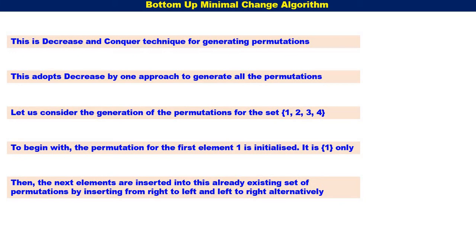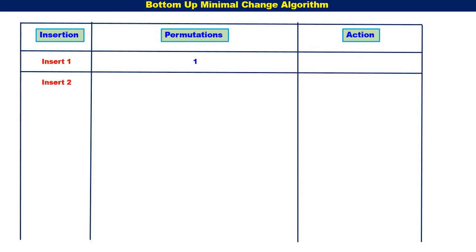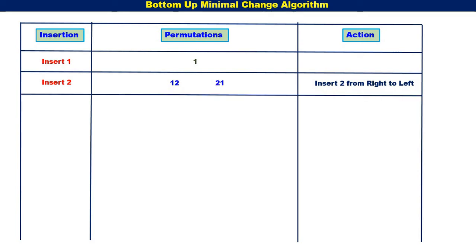With an example, it will be more clear. Insert 1 — there is only 1 permutation: {1}. Next, insert 2. It should be inserted into the already existing permutation {1}, and as I told, we have to start from right to left. First, we insert 2 to the right of 1, we get {1, 2}. Then {2, 1}. So we got 2 permutations here.